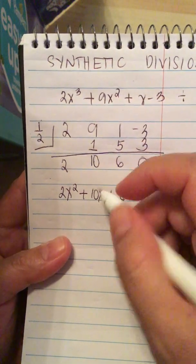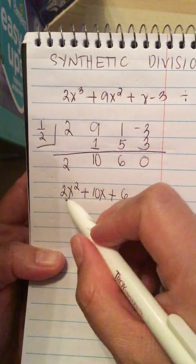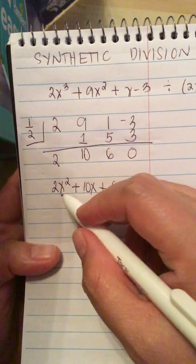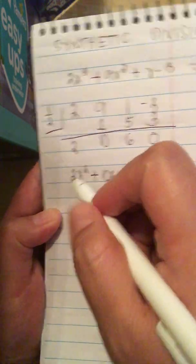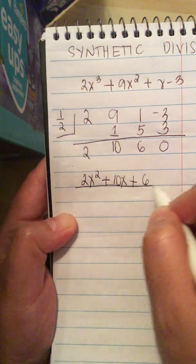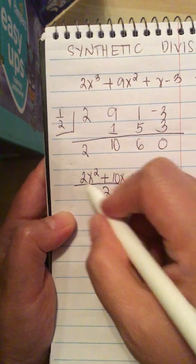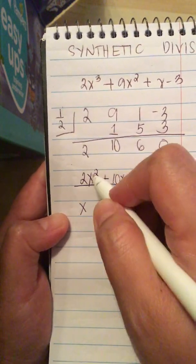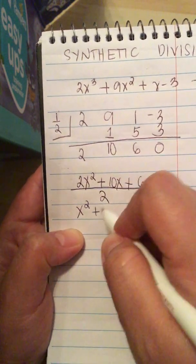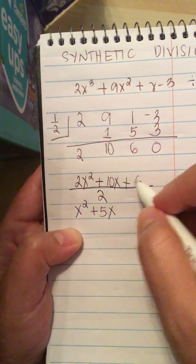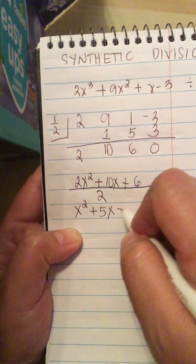So now we can divide this by 2, since we can factor out 2, or easily divide by 2. So 2 divided by 2 is 1. So we just have x squared. 10 divided by 2 is 5. So 5x. And 6 divided by 2 is 3.